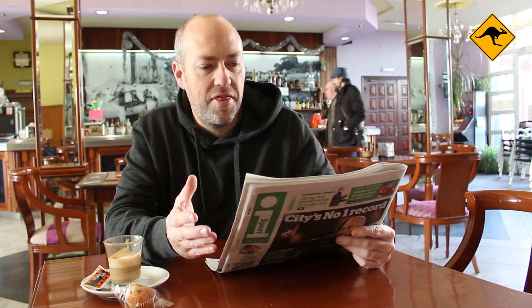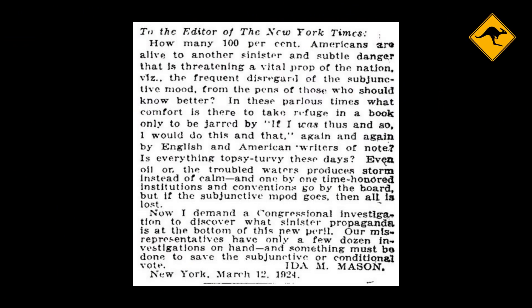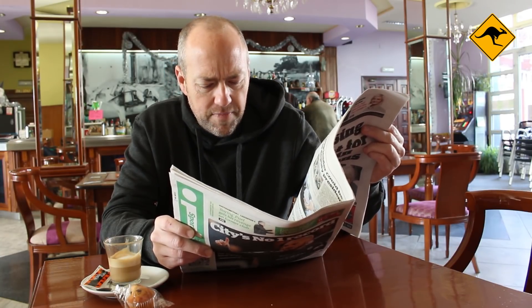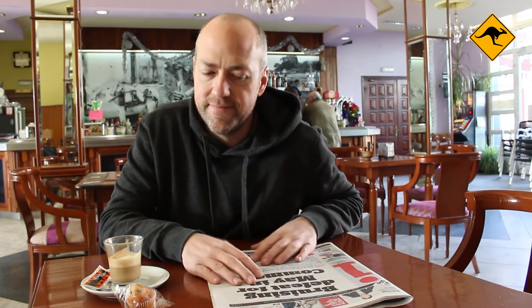What a great way to start the day with a coffee and a newspaper. If I was reading the New York Times on March 12th, 1924, then I would see this letter to the editor from Ida Mason. It begins: 'How many 100% Americans are alive to another sinister and subtle danger that is threatening a vital prop of the nation?' It goes on to say, 'I demand a congressional investigation to discover what sinister propaganda is at the bottom of this new peril.' This was written during the Roaring Twenties, at the height of the era of Prohibition. Whatever this letter was talking about, it must have been something pretty serious. Well, actually, it was about the disappearance of the subjunctive.